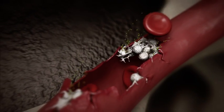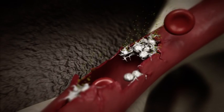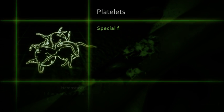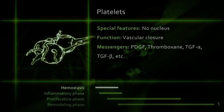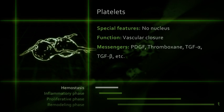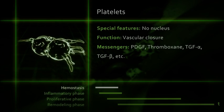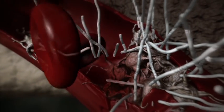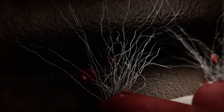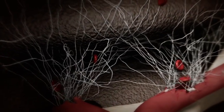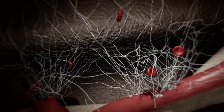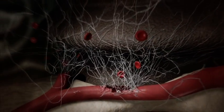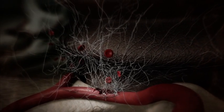Platelets release various messenger substances for cell-to-cell communication, such as thromboxane, which promotes platelet aggregation, or PDGF — platelet-derived growth factor — which stimulates the cell division of fibroblasts. Fibrin monomers spontaneously cross-link, forming a fibrin network. The blood clot permeates the wound space, forming a provisional matrix, and also adheres to the implant surface. This blood clot has tremendous importance as a provisional matrix for subsequent bone healing processes on the implant surface.